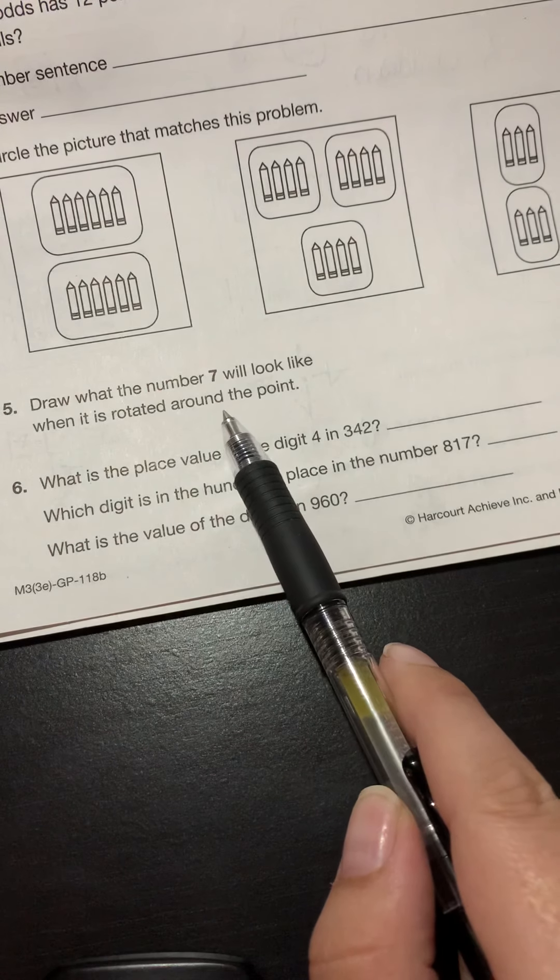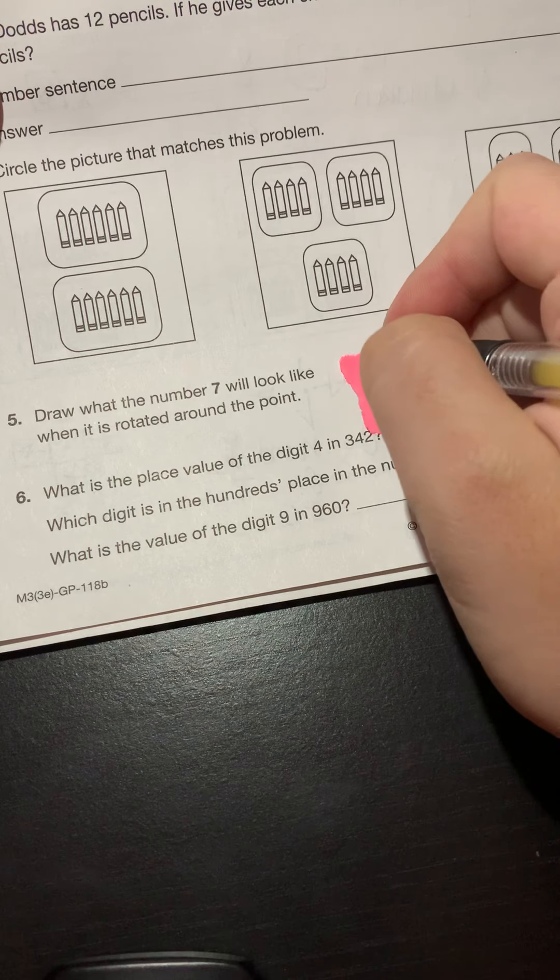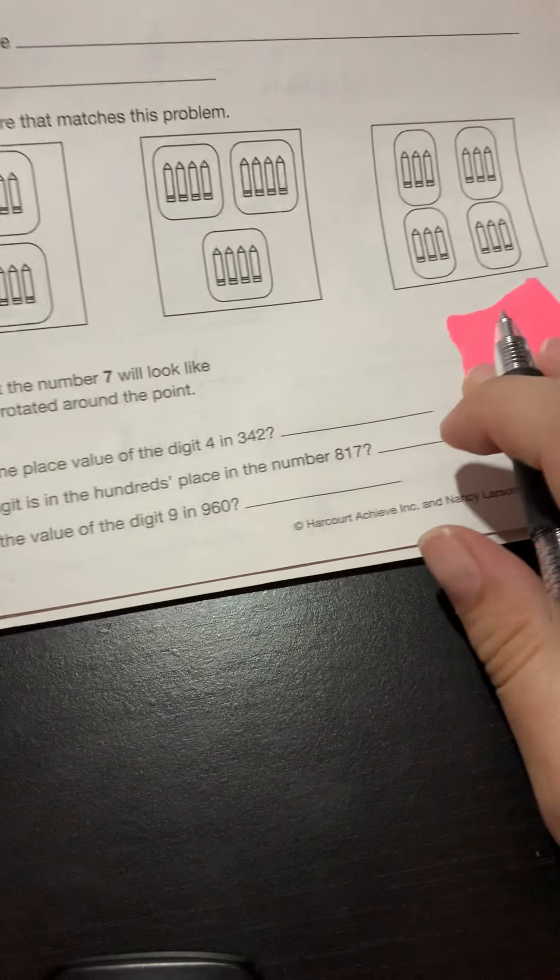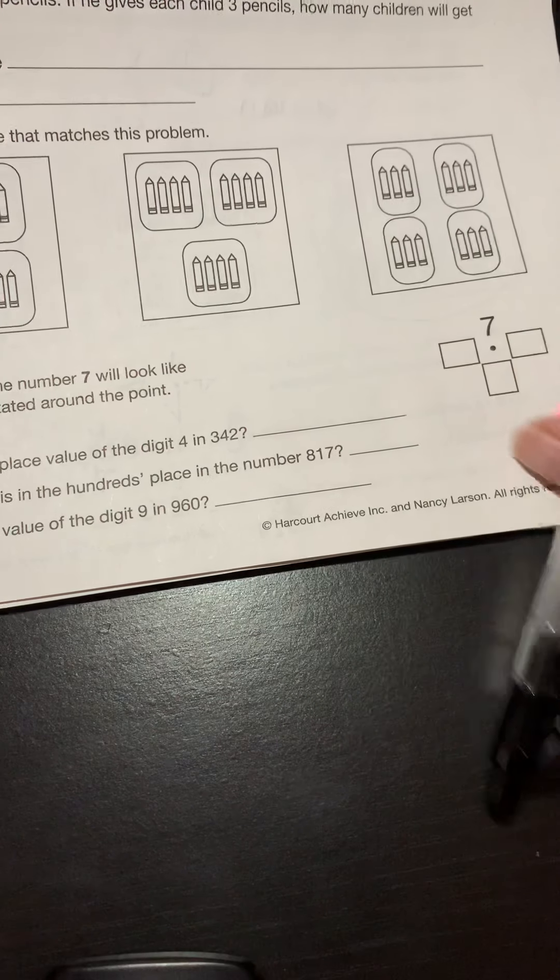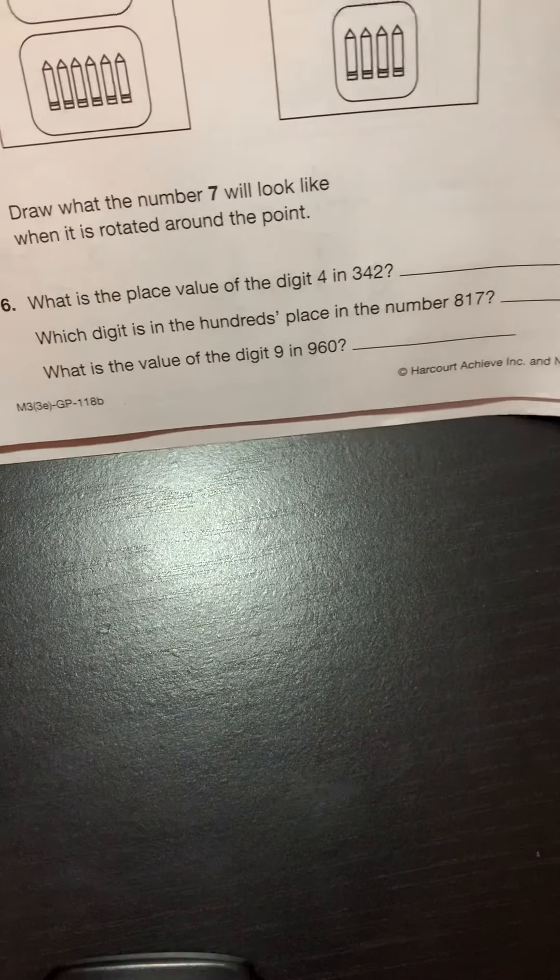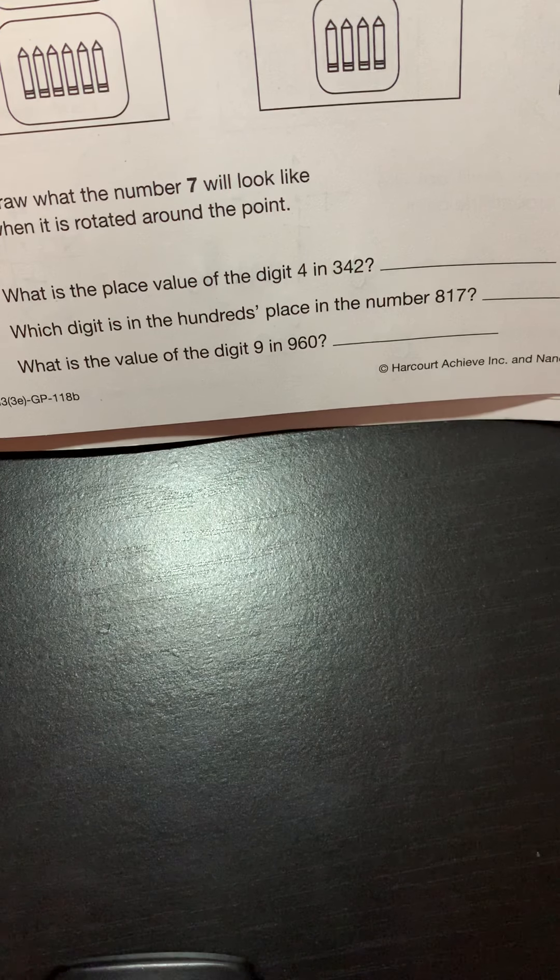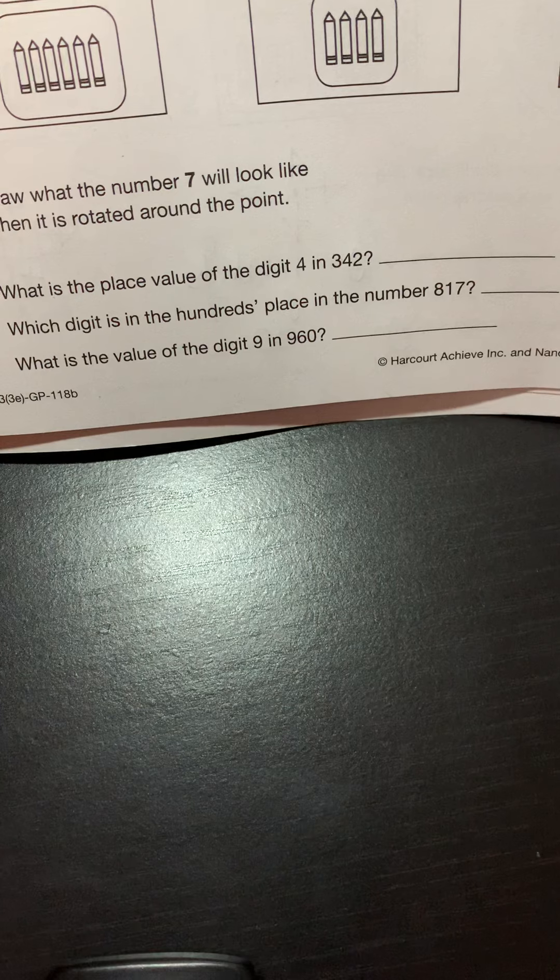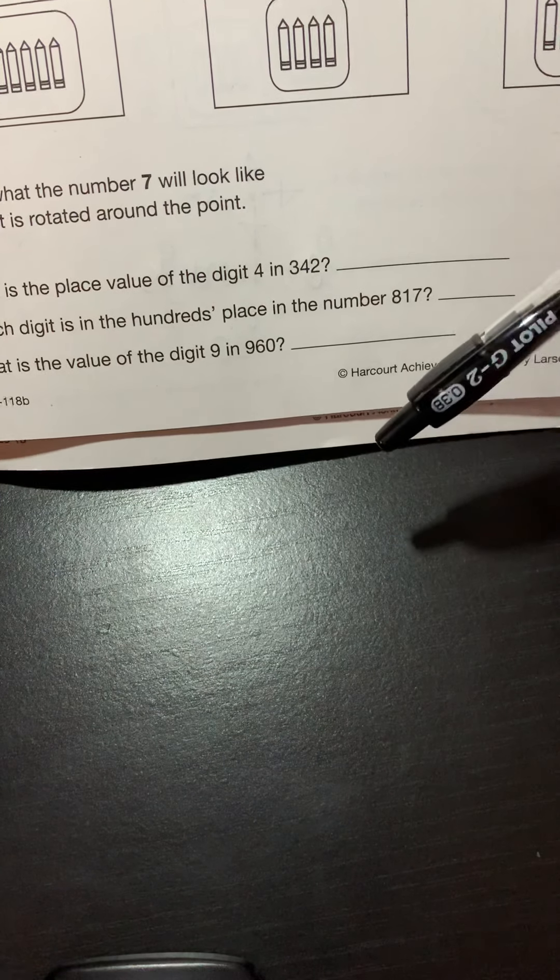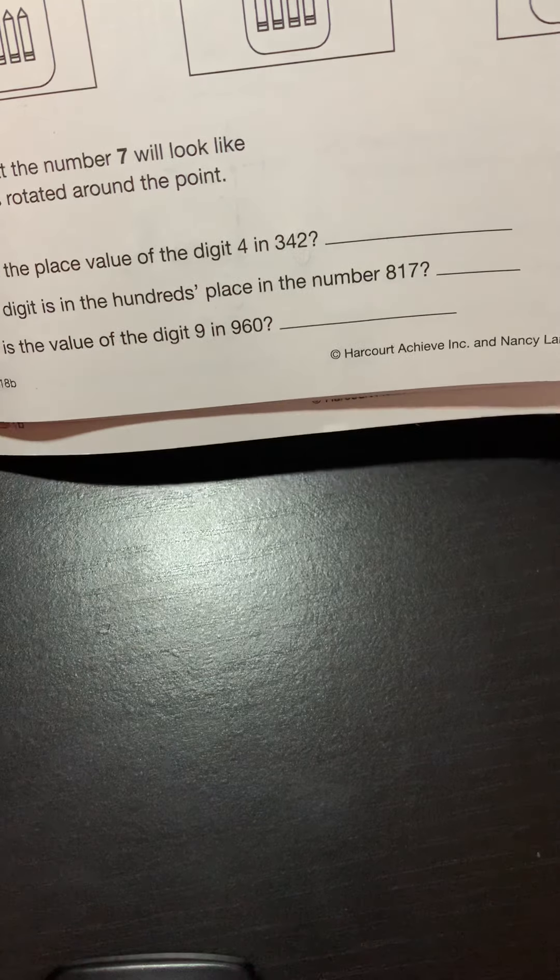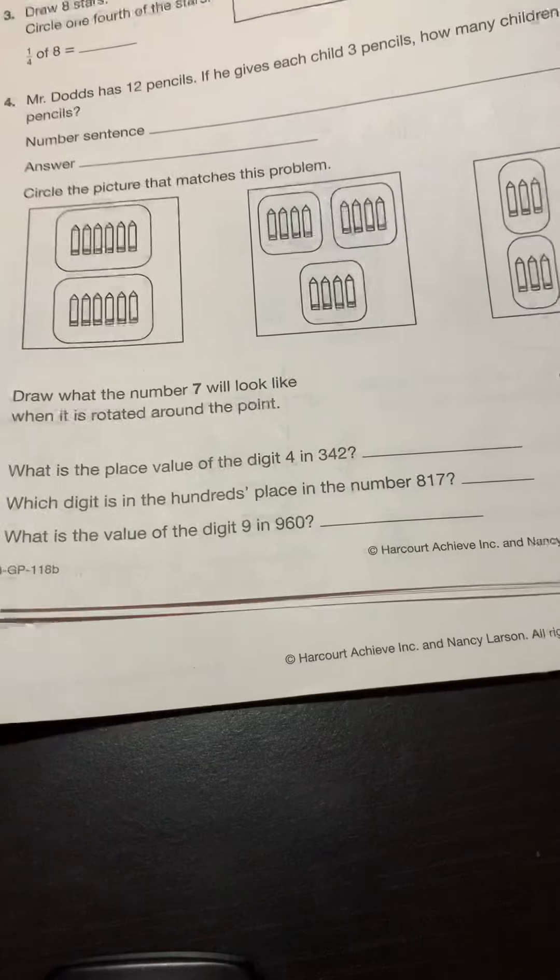Number five, draw what the number seven will look like when it's rotated around the point. Get a small piece of paper, maybe the same one you used for your classwork. And on the back, draw your seven, take it and rotate it around the circle. So that way, you know what it's going to look like in each position. Sorry, I did a terrible job rotating right now. Last one, number six, what's the place value of the digit four in 342, which digit is in the hundreds place in the number 817? And what is the value of the digit nine in 960? If you're not sure what the question is asking you, look back on the front page and see what our answers were on the front page. So that way, you know what kind of answer you're going to put for each of these questions here. All right, guys, have a great rest of your day.